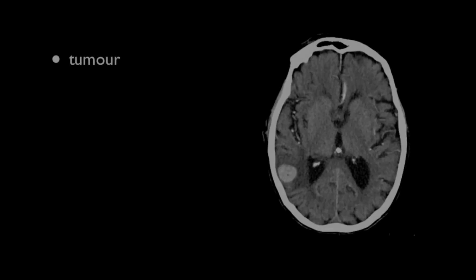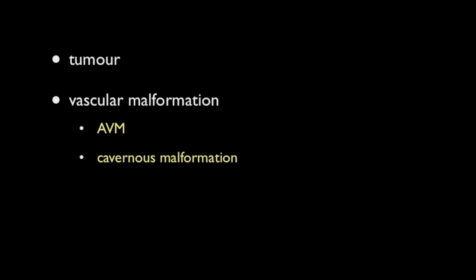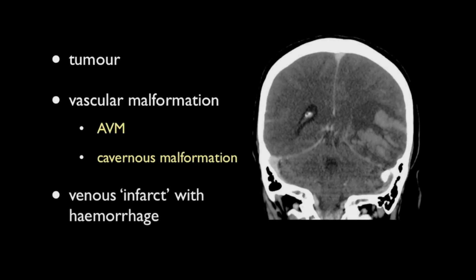When evaluating patients with a large superficial hemorrhage, it's important to keep in mind the possibility of underlying lesions, especially in young patients. An underlying tumour, an underlying vascular malformation such as an arteriovenous malformation or a cavernous malformation, as well as venous infarcts should be considered. The latter typically has a very heterogeneous or gyroform appearance to the blood, and is located in parts of the brain drained by adjacent dural venous sinuses.